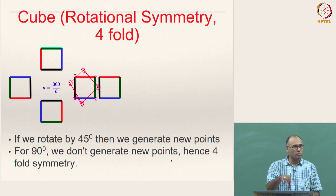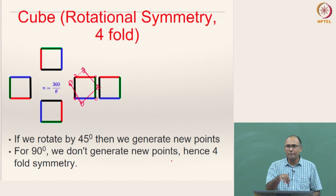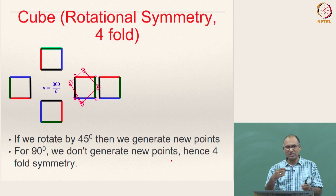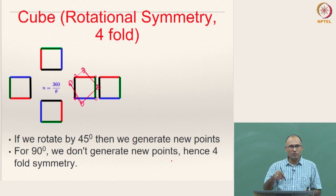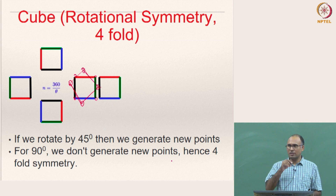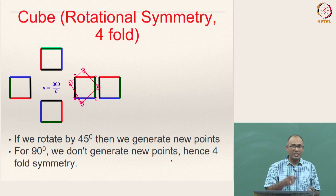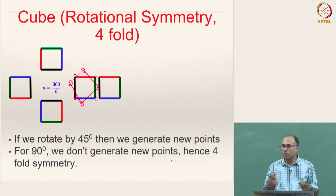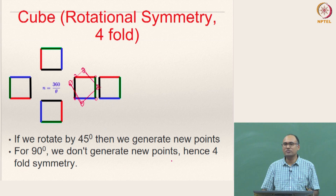That is why a cube can have 4-fold symmetry — this is 4-fold symmetry about one axis. If it is a cube, how many such 4-fold symmetries can exist? You can rotate about the x-axis, the y-axis, and the z-axis — three coordinate axes. Hence, a cube has three 4-fold symmetry axes.